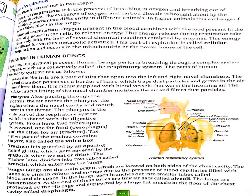Energy released during respiration takes place with the help of several chemical reactions by enzymes, and this energy is utilized for various metabolic activities. This is called cellular respiration, which takes place in the mitochondria — called the powerhouse of the cell.